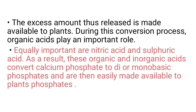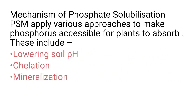But the amount made soluble and released is in excess of the requirement of microorganisms. The excess amount thus released is made available to plants. During this conversion process, organic acids play an important role. Equally important are nitric acid and sulphuric acid. As a result, these organic and inorganic acids convert calcium phosphate to di- or monobasic phosphates, which are then easily made available to plants.